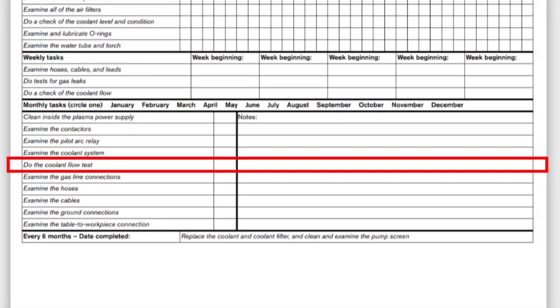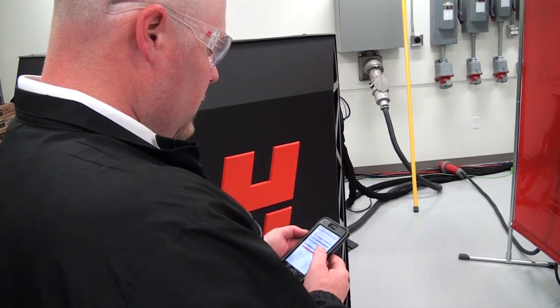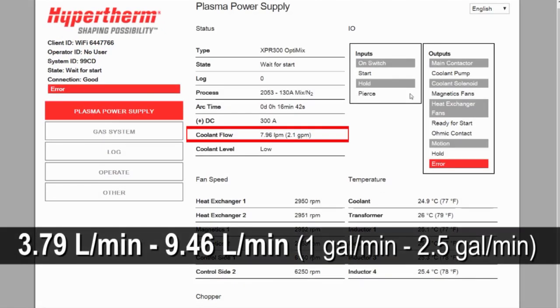Next, perform a coolant flow test. Visually look at the CNC or XPR web interface screen to check the coolant flow rate. Make sure that the coolant flow rate is between 3.79 and 9.46 liters per minute or 1 to 2.5 gallons per minute.